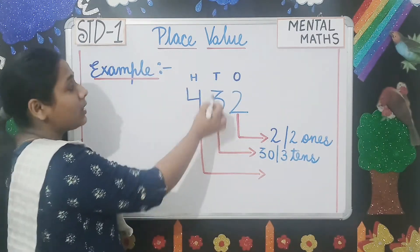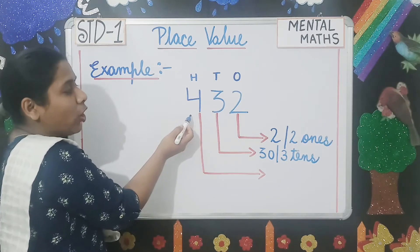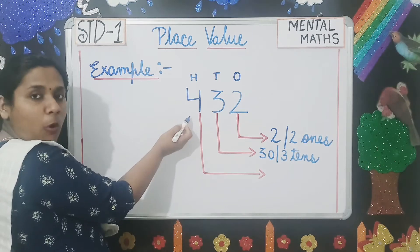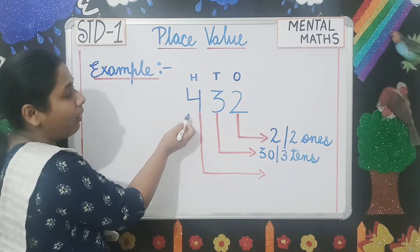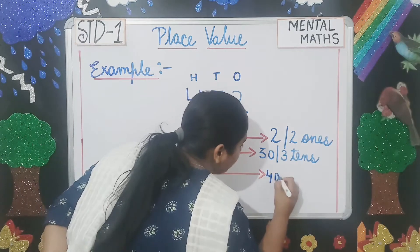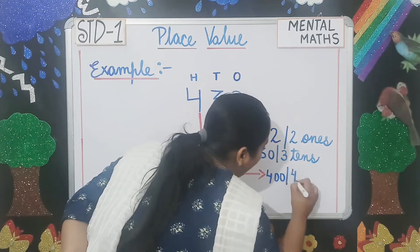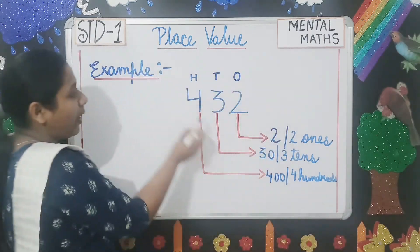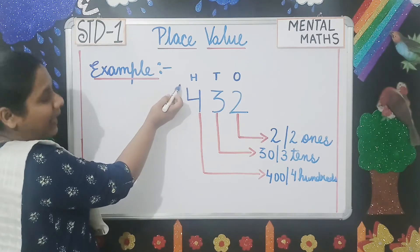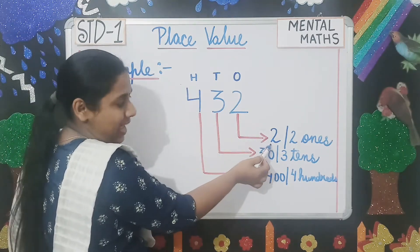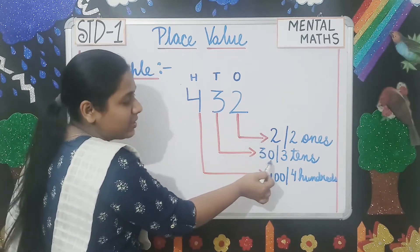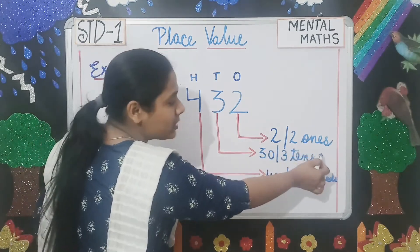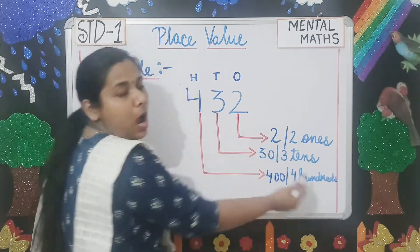Why? Because this 3 is in the tens place. Moving on to 4 — the place value of 4 here is 400 or 4 hundreds, because this 4 is in the hundreds place. So we can write the place values as: 2 ones, 30 or 3 tens, and 400 or 4 hundreds.